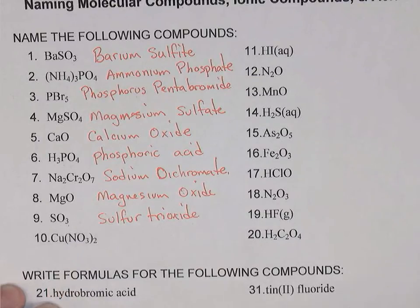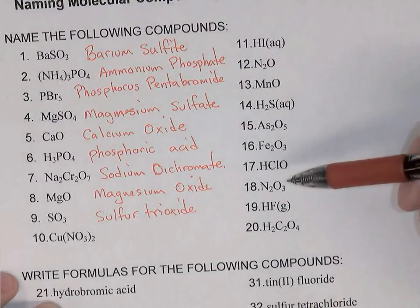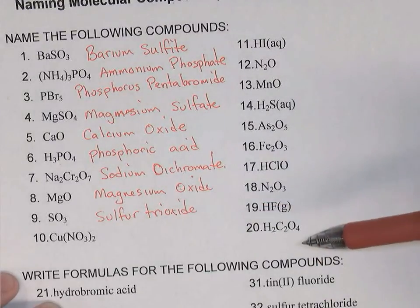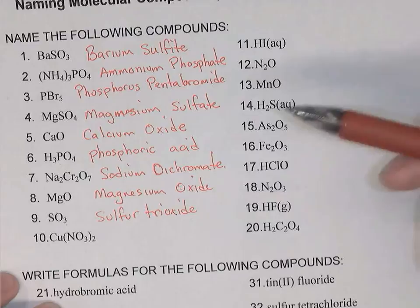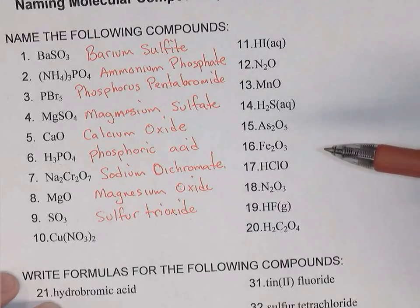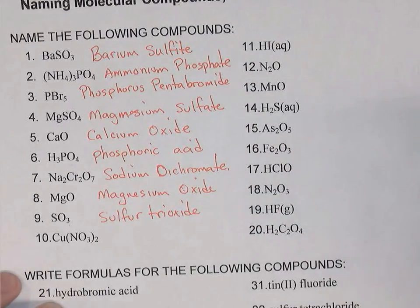There's one other type not on this worksheet: a hydrated ionic compound, where those same prefixes are used to tell how many water molecules are attached. But none of these examples are hydrates.